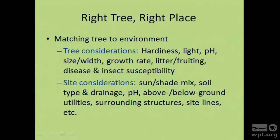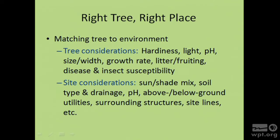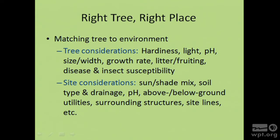We want to think about tree hardiness—is the tree going to be hardy for your environment? Is the appropriate light available? Some trees prefer partial shade, some prefer full sun. What is the pH of your soil? pH is a measure of alkalinity and acidity. In south central and southeastern Wisconsin we tend to have more alkaline soils, while farther north we tend to have more acidic soils. You want to make sure your tree is well adapted for the soil type you have.